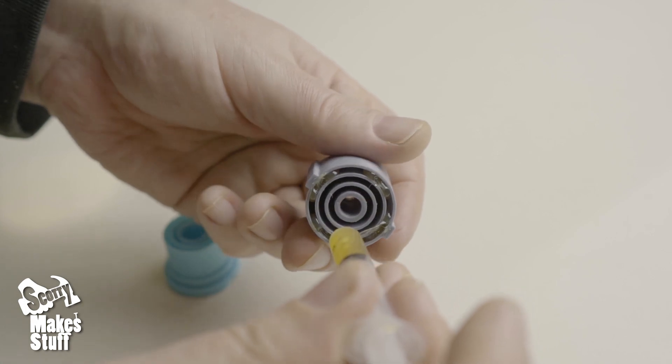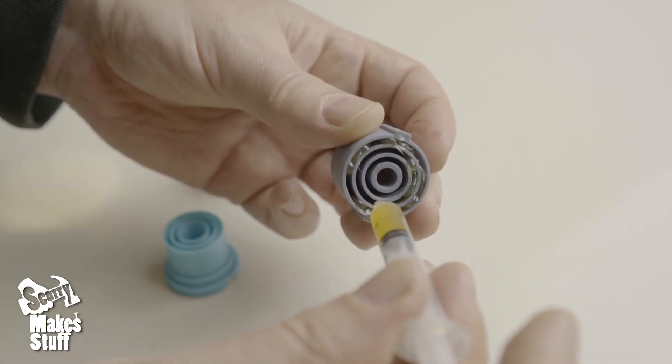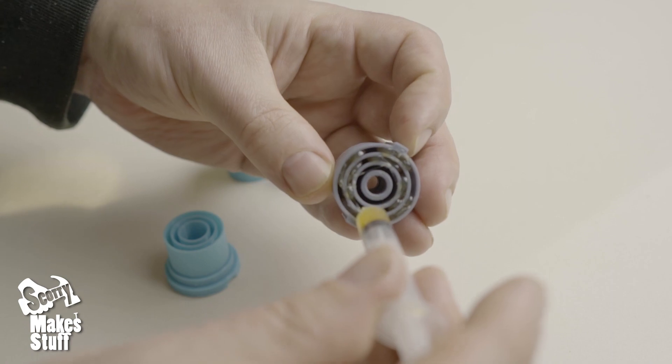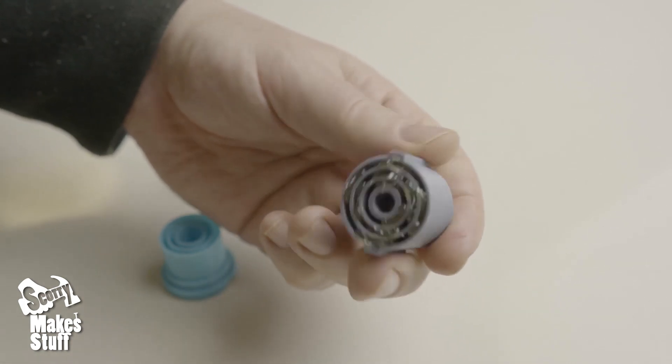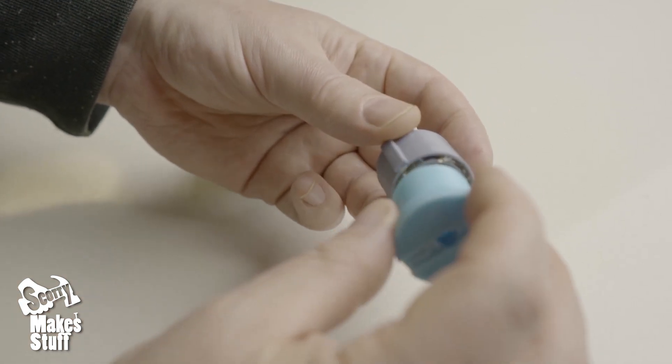Once filled, I gently rotate the matching dampener sides together to spread the grease evenly. If no grease comes out the sides, I'll do this process a second time until it does, and then clean up any excess.